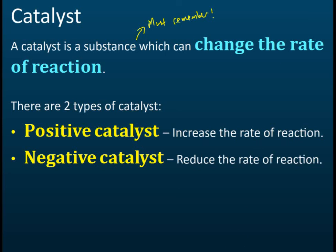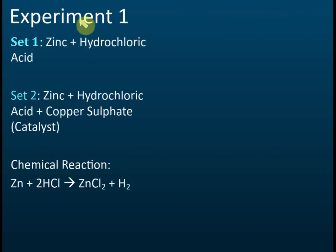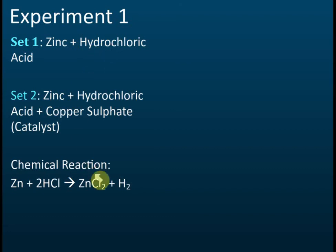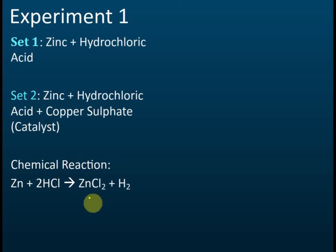Now let's look at experiment one — the reaction between zinc and hydrochloric acid. This is one of the reactions of acid: a reactive metal with acid produces salt and hydrogen gas. Zinc reacts with hydrochloric acid to produce zinc chloride (a salt) and hydrogen gas.